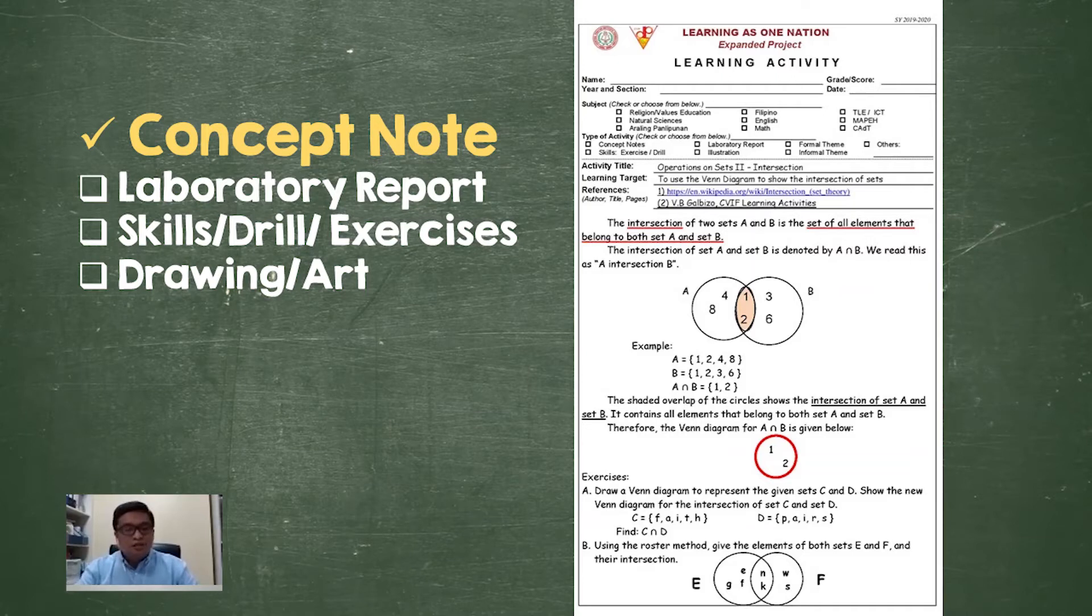What you see on the screen right now is an example of a concept note for math. This is for grade 7 math. You'll notice that in this example, you start with the concept digest. Since the lesson is about the intersection, we try to define what the intersection of set is at the very start.